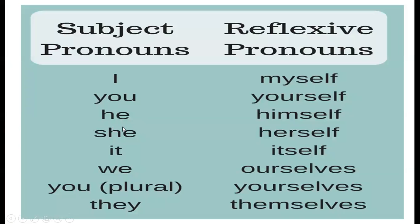For the subject pronoun 'I', the reflexive is 'myself'. For 'you' singular, we write 'yourself'. Then 'he' → 'himself', 'she' → 'herself', 'it' → 'itself', 'we' → 'ourselves'. For 'you' plural, pay attention — we write 'yourselves'. For 'they', we use 'themselves'. Like this we have to use reflexive pronouns.